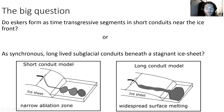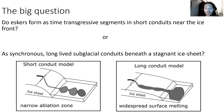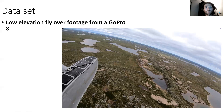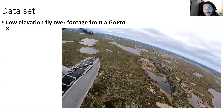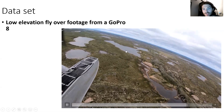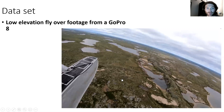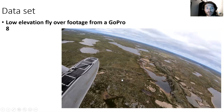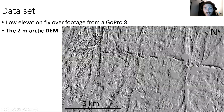In this model, most of our geomorphological work is being done here at the ice margin, whereas in the long conduit model, some of our geomorphological elements are explained by changes in the dimensions of the subglacial channel through cavities. Our dataset includes low elevation flyover footage from a GoPro 8, and we're going to combine that with the 2-meter Arctic DEM.